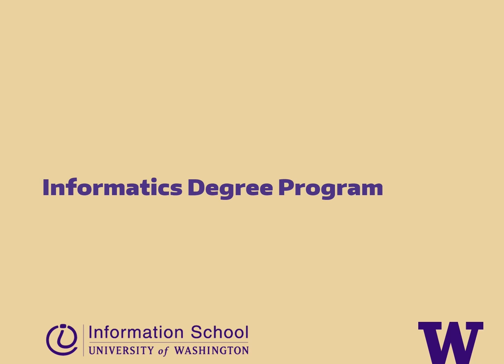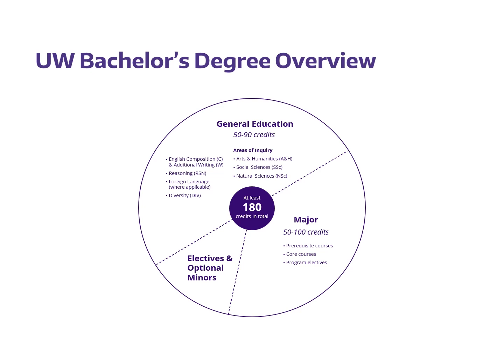Informatics is one of the majors offered at the University of Washington. This video will go over the kinds of courses you would take as an informatics major. The University of Washington bachelor's degree is made up of general education requirements, major requirements, and other courses to meet a minimum of 180 credits. We're going to break down what each of these parts looks like for the Bachelor of Science in Informatics degree.